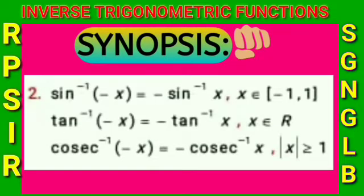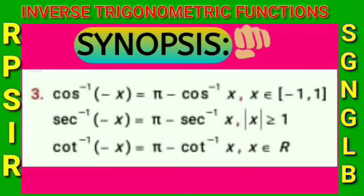Second point: sin⁻¹(-x) = -sin⁻¹(x), tan⁻¹(-x) = -tan⁻¹(x), cos⁻¹(-x) = π - cos⁻¹(x). Third point: sec⁻¹(-x) = π - sec⁻¹(x), cot⁻¹(-x) = π - cot⁻¹(x).